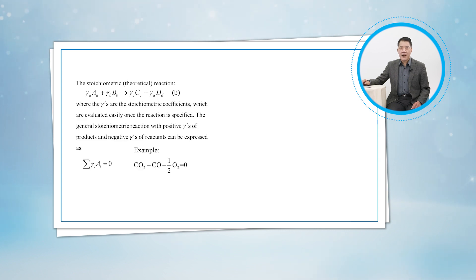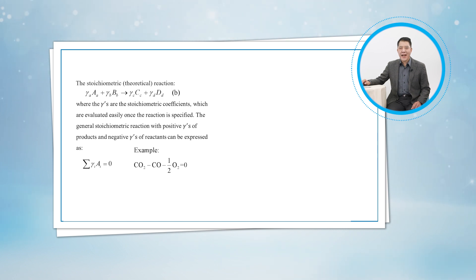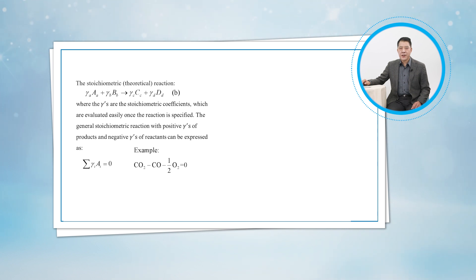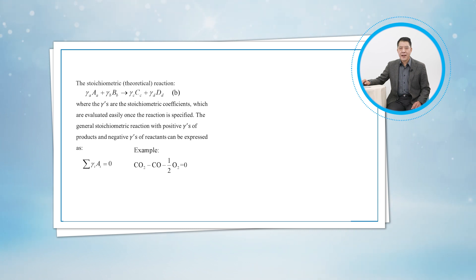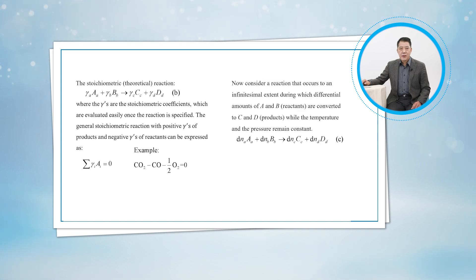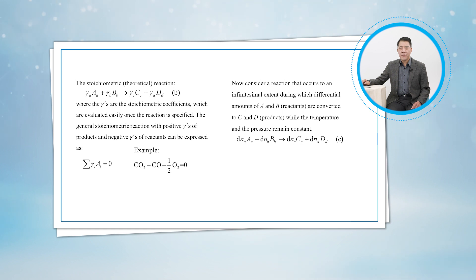For a stoichiometric reaction, where the gammas are the stoichiometric coefficients, which are evaluated easily once the reaction is specified, the general stoichiometric reaction with positive stoichiometric coefficients for products and negative stoichiometric coefficients for reactants can be expressed as follows.